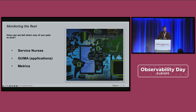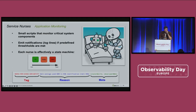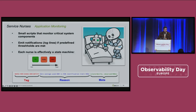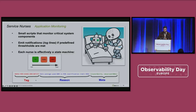How do we actually monitor the fleet? This is how we've done it until now. We have three components to the monitoring pipeline: service nurses, GUMA, and metrics. Service nurses and GUMA go together — this is about application monitoring. These are small scripts which basically continuously monitor the status of services on the device. When something goes wrong, they emit a notification which is a log line, and each nurse is effectively a state machine. Different events can trigger the nurse to emit different log lines. This is fed into syslog and labeled with metadata.